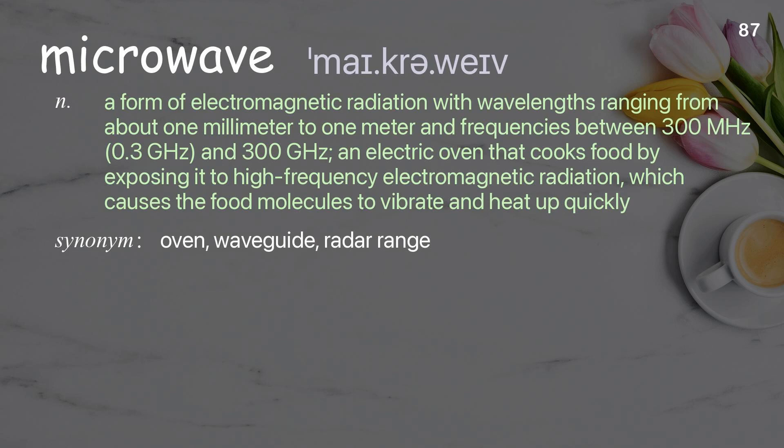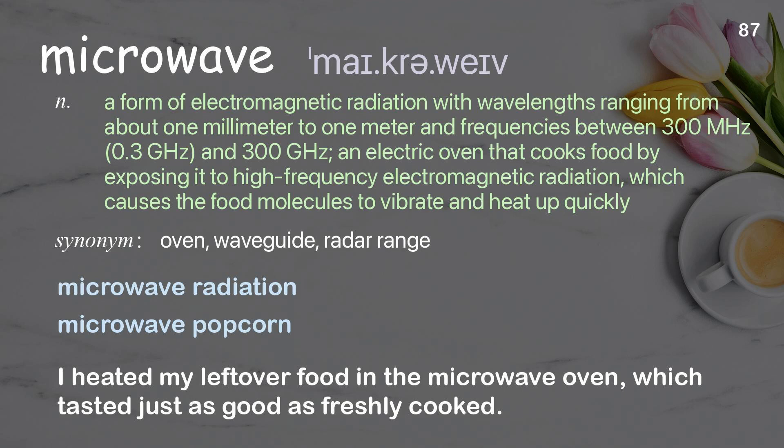Microwave: a form of electromagnetic radiation with wavelengths ranging from about 1 mm to 1 m and frequencies between 300 MHz and 300 GHz. Also: an electric oven that cooks food by exposing it to high-frequency electromagnetic radiation. Examples: microwave radiation, microwave popcorn. I heated my leftover food in the microwave oven, which tasted just as good as freshly cooked.